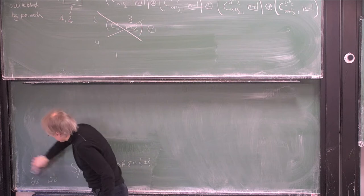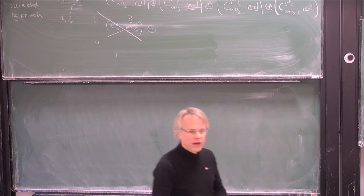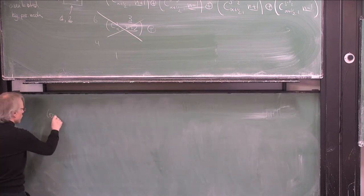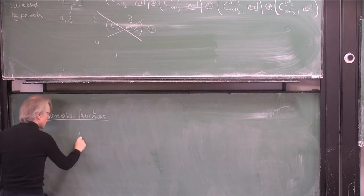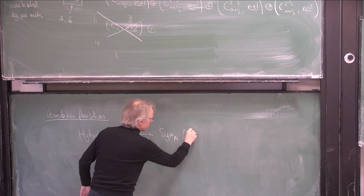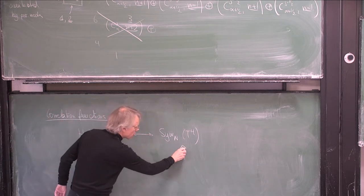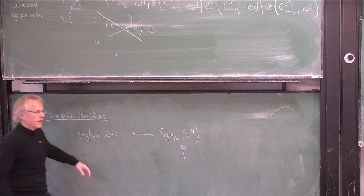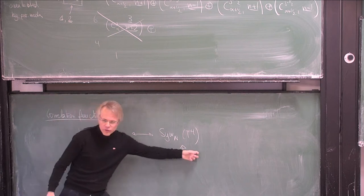Now I have been mentioning that this is N goes to infinity but also captures 1/N corrections. In order to explain that I have to explain how correlation functions between the two descriptions are related. We have the hybrid string at K equals 1 on one side, and the symmetric orbifold of T4 on the other. To explain how correlation functions match I'll first explain how to calculate them in the symmetric orbifold of T4 — that's old material — and then explain how to get them from the hybrid formalism.